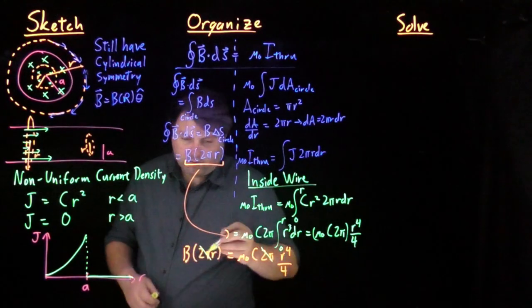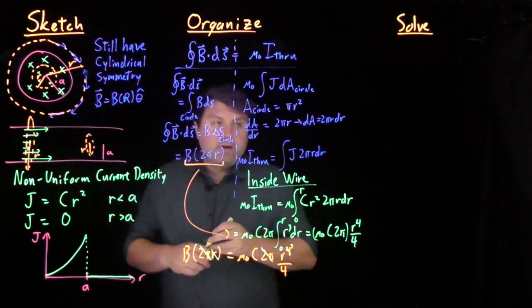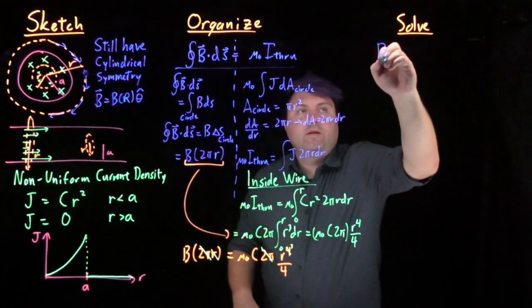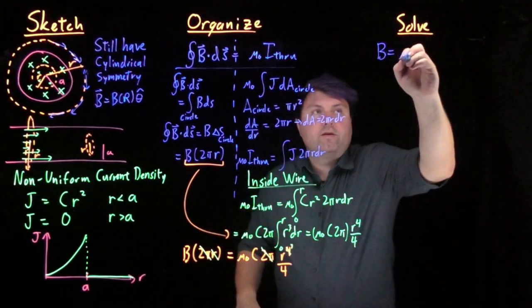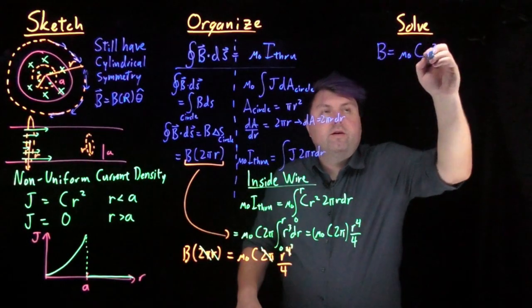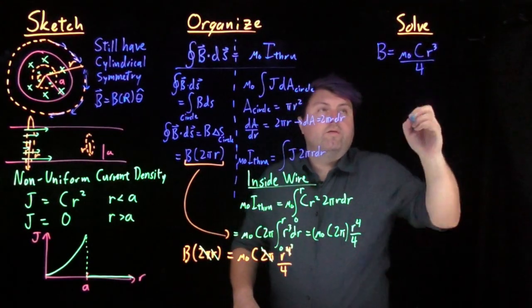So we can cancel to 1 power, and we get then that our magnetic field is mu naught times c times r to the third over 4.